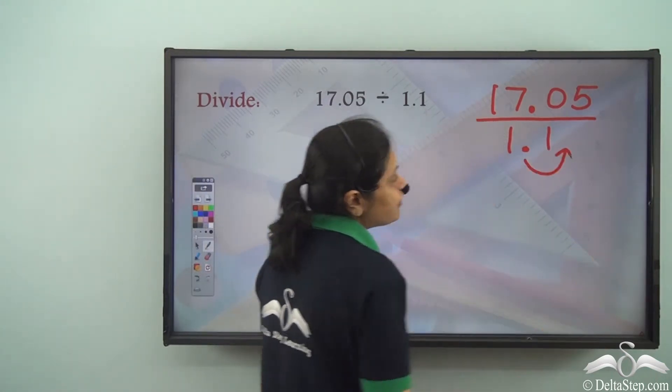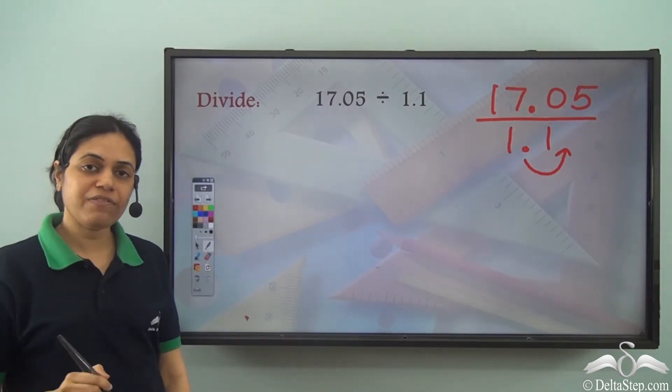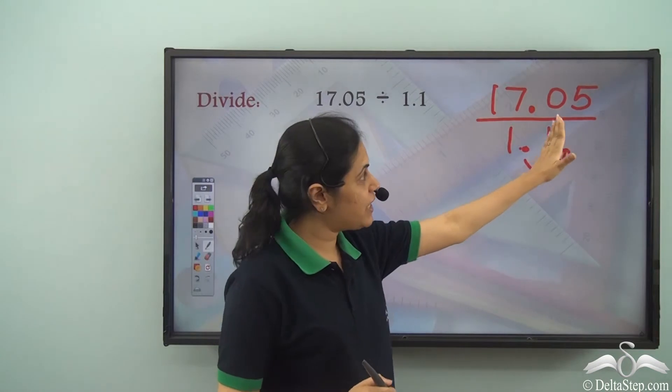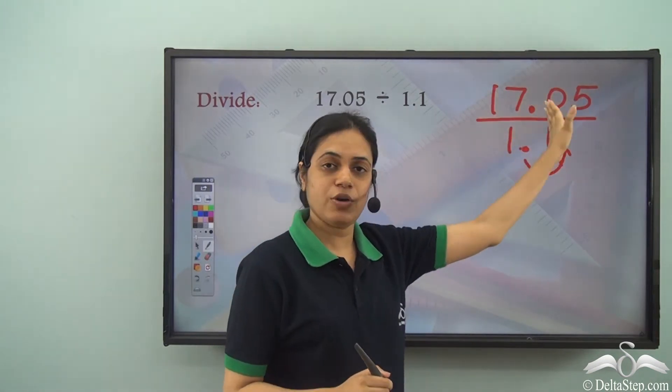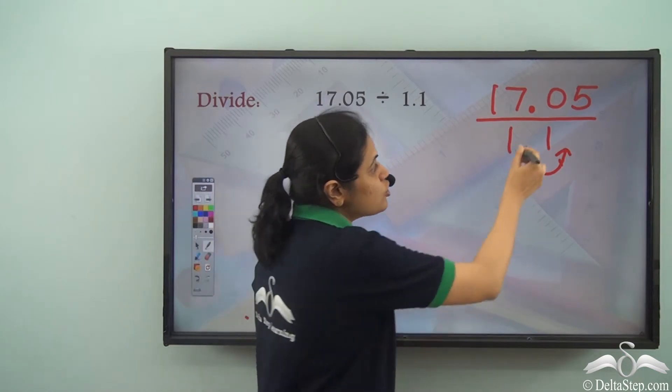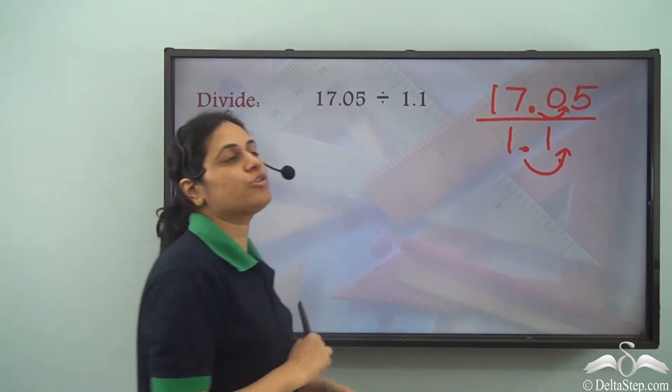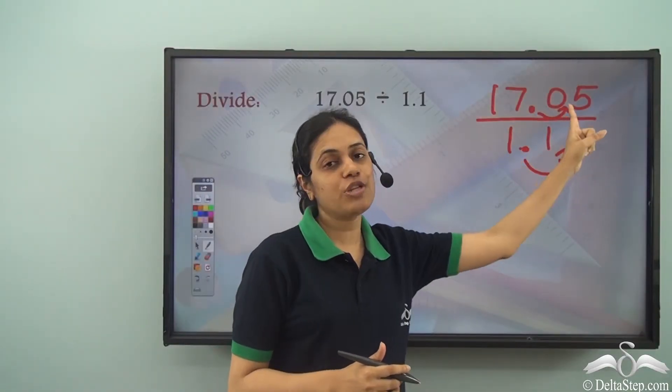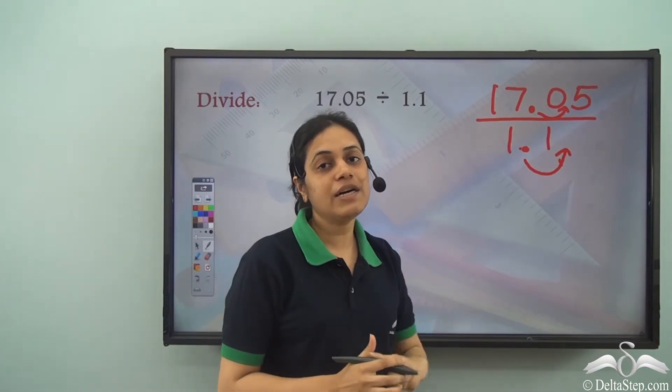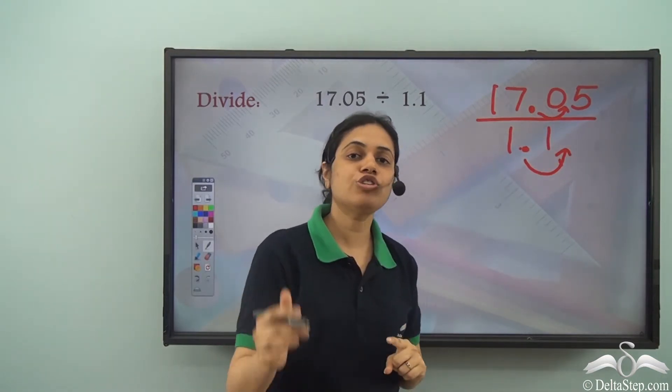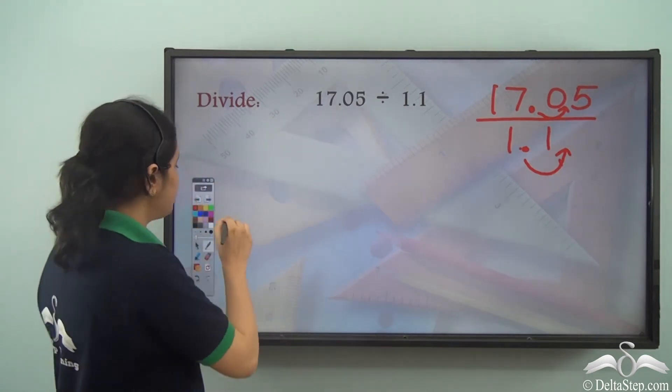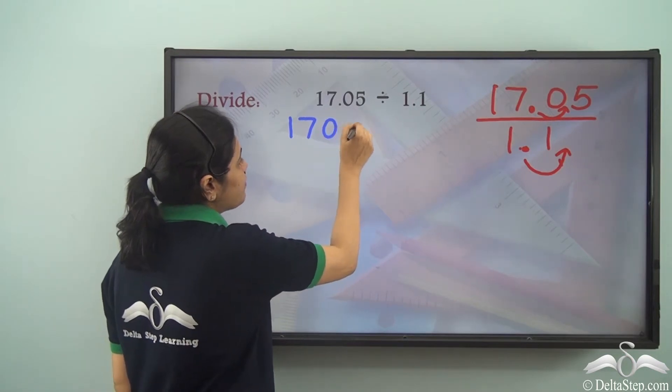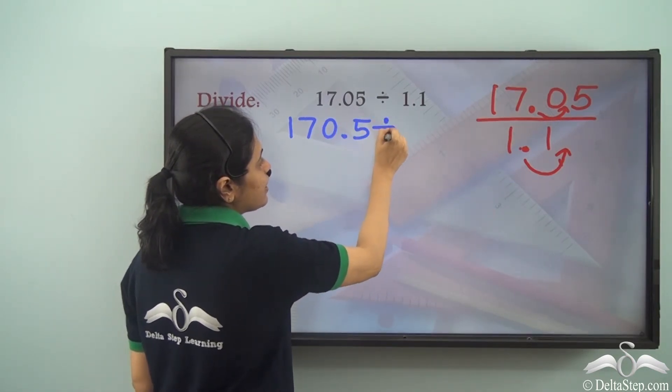For doing that, I need to shift the decimal point to the right by 1 place. So I need to multiply it by 10. And if I multiply it by 10, even the dividend or the numerator will be multiplied by 10. So even this point will shift to the right by 1 place. So if the decimal point in the divisor shifts to the right by 1 place, the decimal point in the dividend will also shift to the right by 1 place. So now this becomes 170.5 divided by 11.